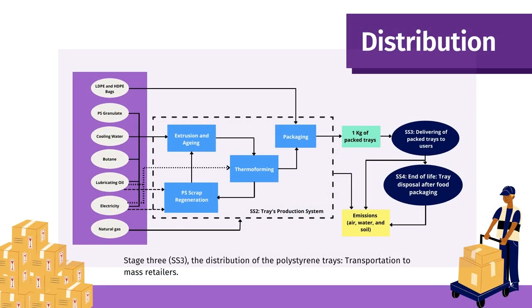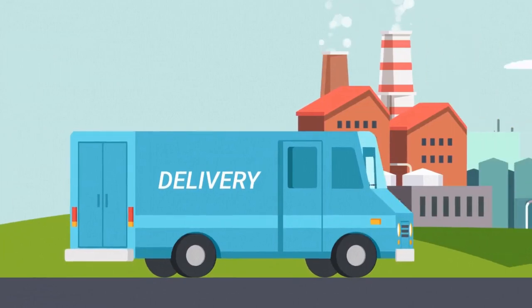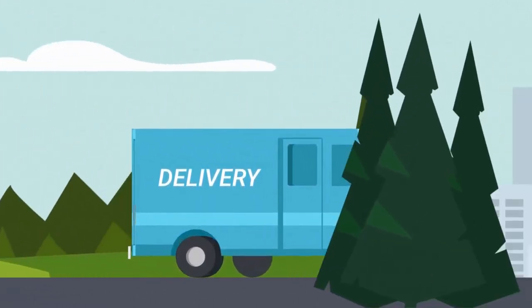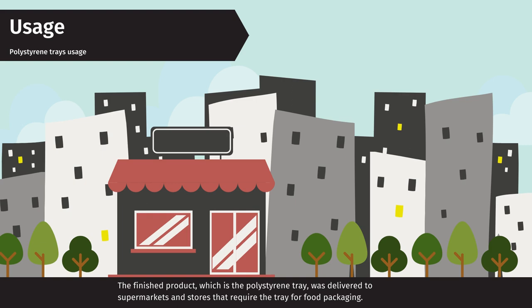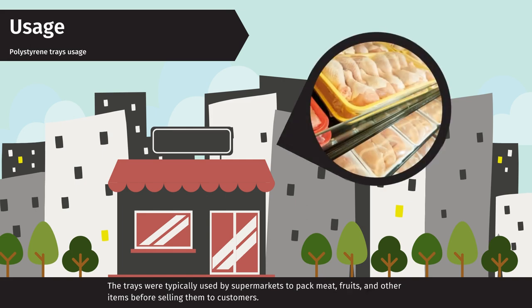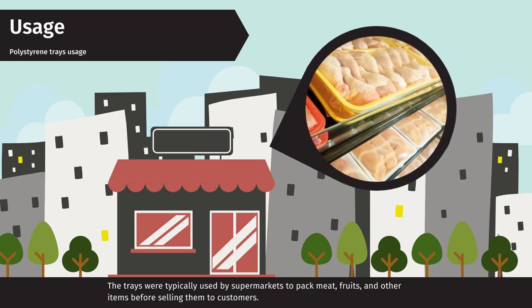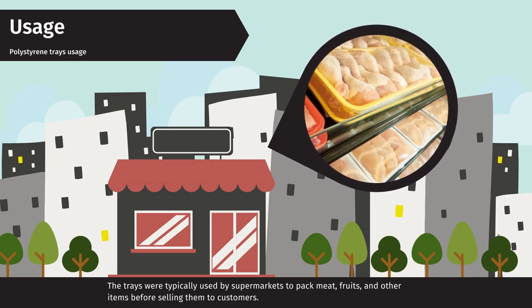Stage 3 — Distribution of the Polystyrene Trays, Transportation to Mass Retailers, Delivering Phase. In this phase, the packaged trays were delivered to users. The finished product, the polystyrene tray, was delivered to supermarkets and stores that require the tray for food packaging. The trays were typically used by supermarkets to pack meat, fruits, and other items before selling them to customers.